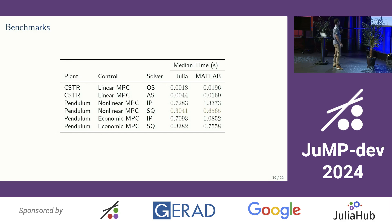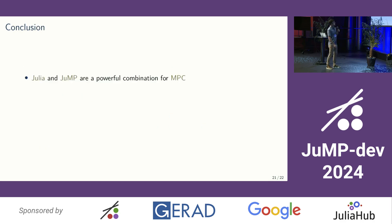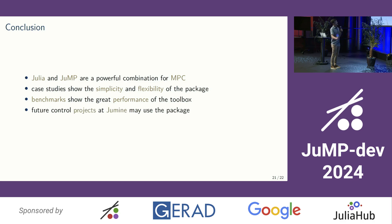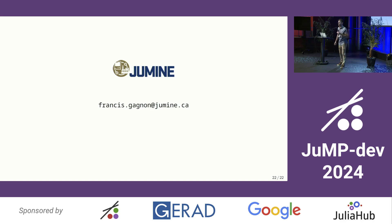To conclude: Julia and JuMP are a powerful combination for MPC. The case studies show the simplicity and flexibility of the package, and the benchmarks show great performance. There is probably still some gain that could be achieved — but this is the first iteration. A future control project at Jumine may use the package, depending on whether we have the flexibility to use any tool we want. Thank you for listening.